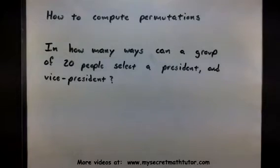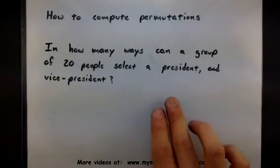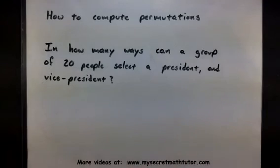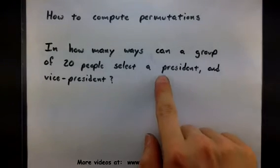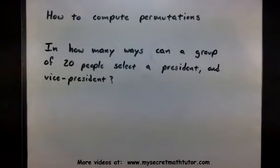As we are selecting people for these two offices, I am not going to select the same person for president and vice president. Every person is only going to get selected once. Also, the order in which we select these people really makes a difference, because the first person I select is going to get president and the second one is going to be vice president. If I decide to select people in a different order, they are going to get a different office. So this is definitely an example of a permutation.